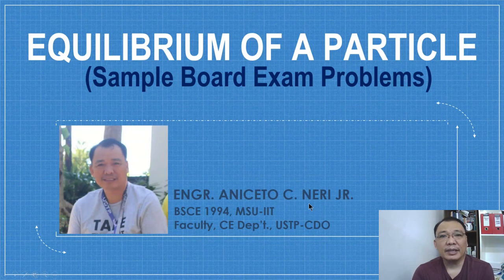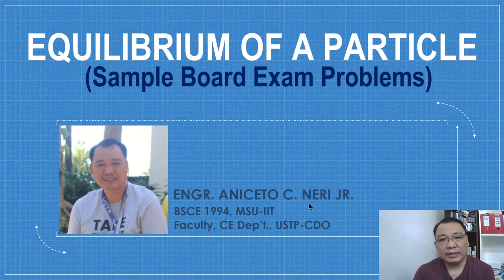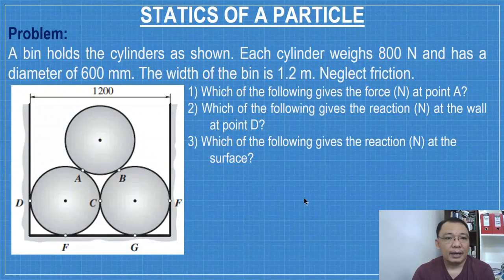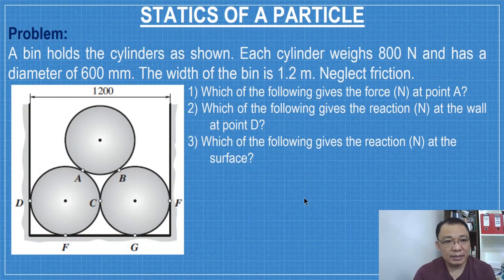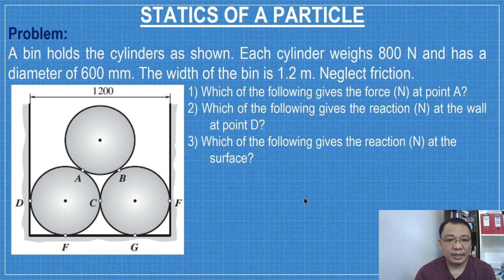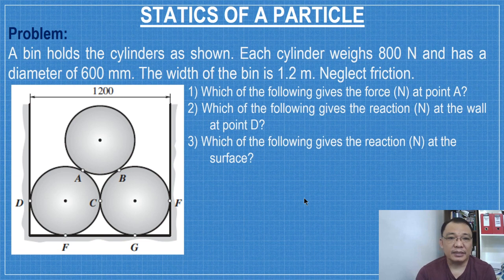Good morning, and for this video I am going to solve example problems about equilibrium of a particle. First problem: a bin holds the cylinders as shown. Each cylinder weighs 800 newtons and has a diameter of 600 millimeters. The width of the bin is 1.2 meters.